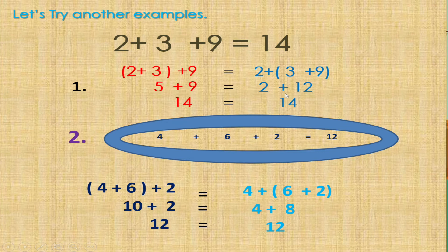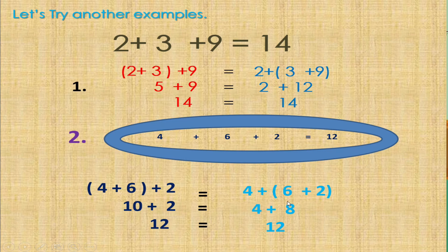I have here another example: 4 plus 6 plus 2 is equal to 12. So i-group muna natin ang 4 at 6: 4 plus 6 is equal to 10. After that, we add 2: 10 plus 2 is equal to 12. Or we can group 6 plus 2 first: 6 plus 2 is equal to 8. Then we add 4: 4 plus 8 is equal to 12.